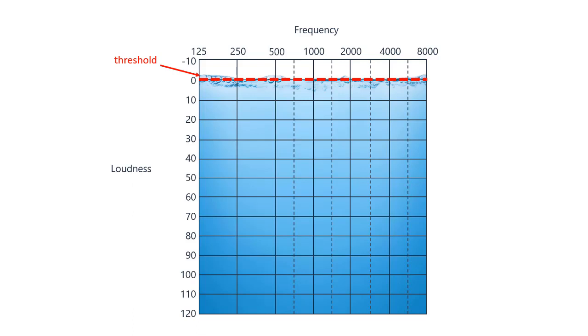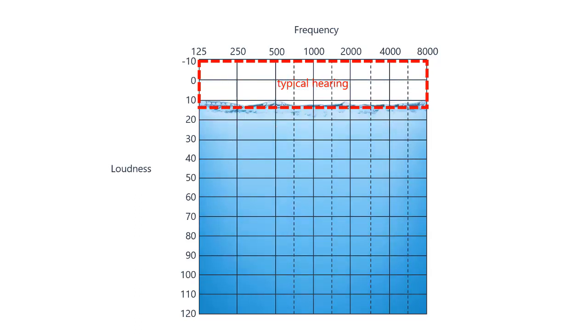This waterline where hearing begins is called, as you know, the threshold of hearing. Anything above the water is too soft to hear. Some people hear better, and some people hear worse than this. Up to 15 decibels is considered typical hearing. Anything worse than that could have an impact on hearing and learning speech and language.